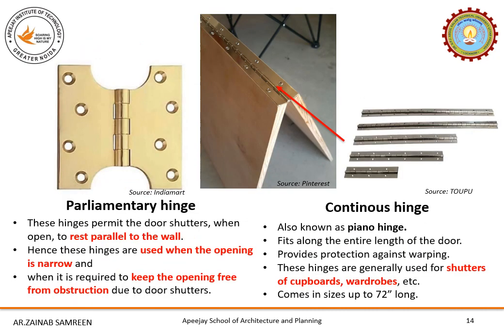The parliamentary hinge permits the door shutters to rest parallel to the wall. Therefore, it is used at places where the opening is narrow and we have to keep the opening free from obstruction. The piano hinge is also called a continuous hinge — as the name suggests, it fits along the entire length of the door. It is available up to 72 inches (6 feet), provides protection against warping, and is generally used for shutters of cupboards, wardrobes, etc.